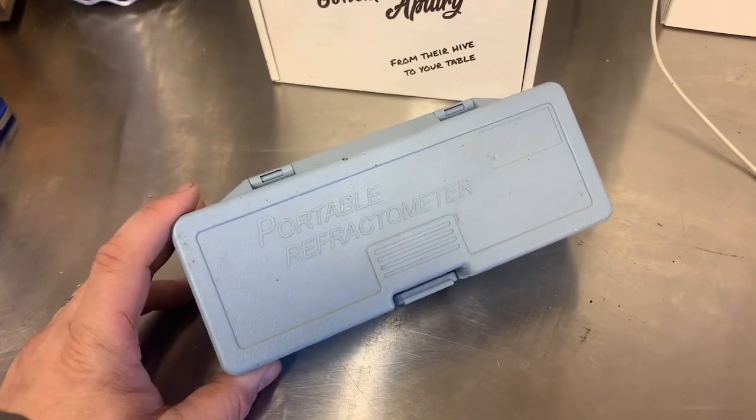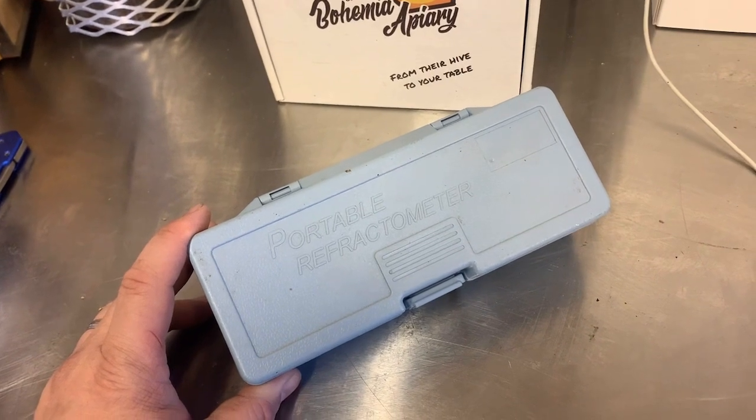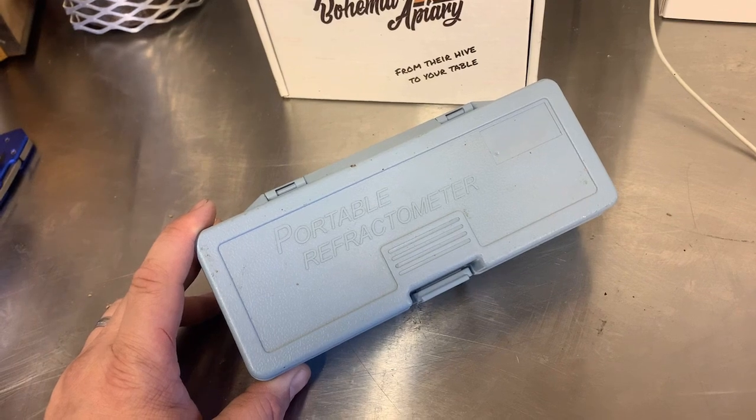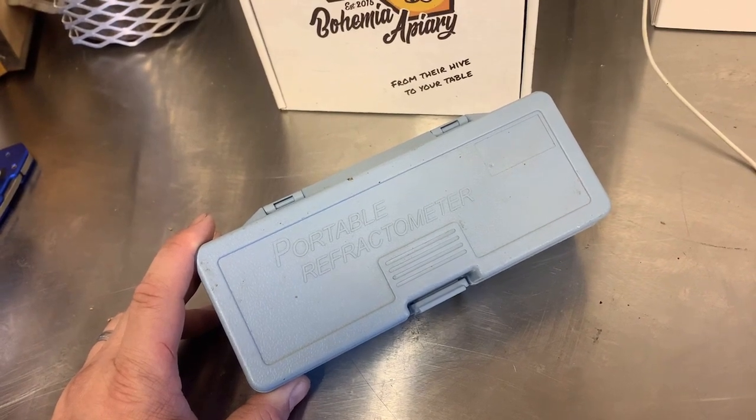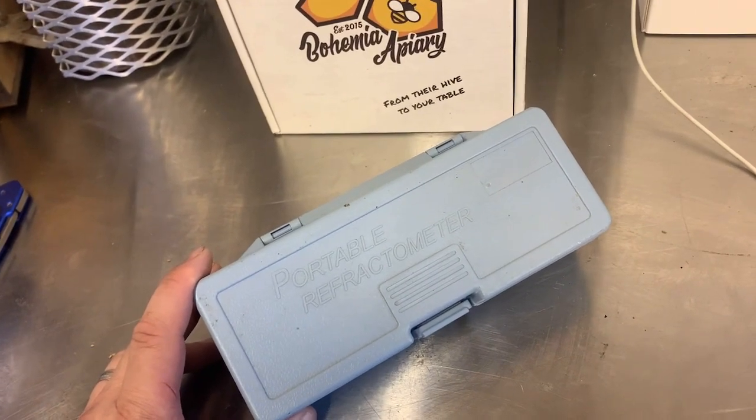This little tool is called a refractometer, and what a refractometer does is it uses light and pushes it through the substance, whether it be water or oil or honey.